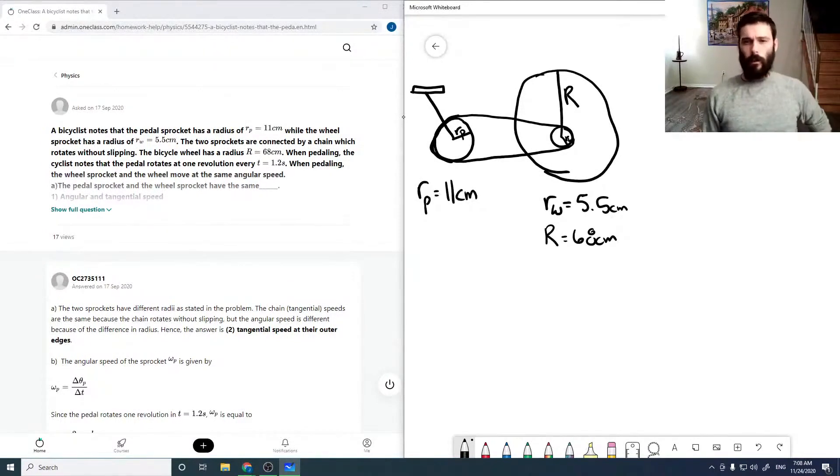It's given in the problem that our period of revolution is 1.2 seconds for our pedal sprocket. Now, these two are connected by a chain without slipping, so the first question just asks: